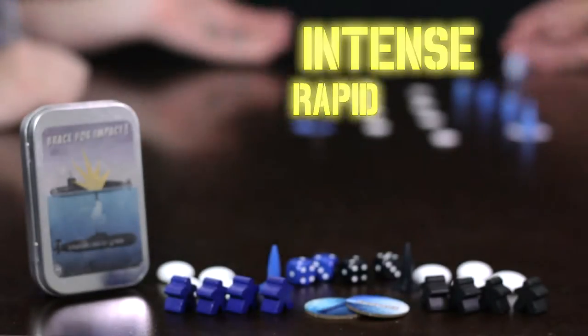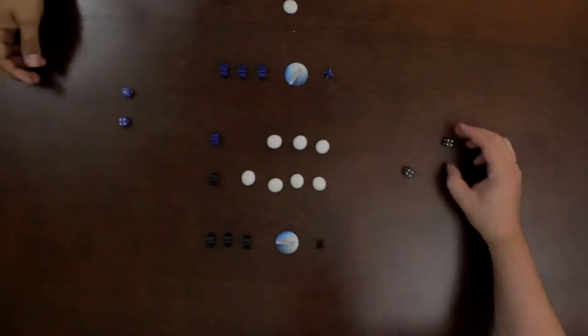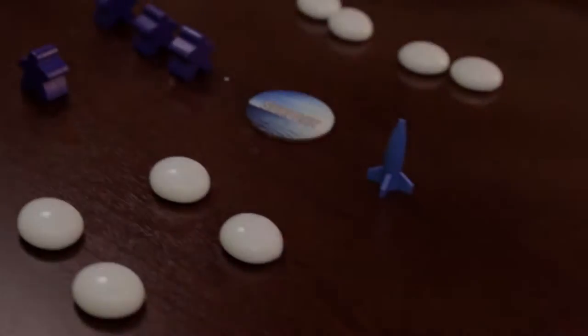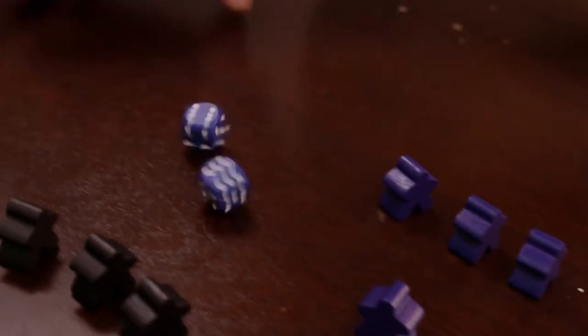Brace for Impact is an intense, rapid-fire skirmish for two players that simulates the white-knuckle tension of a submarine battle using dice, a crew of meeples, and a few tokens.